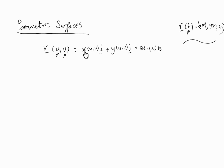And you have function x of u, v, the y component is a function of u, v, and the z component is also a function of u, v. Now this would represent a surface, and this is called a parametric surface.